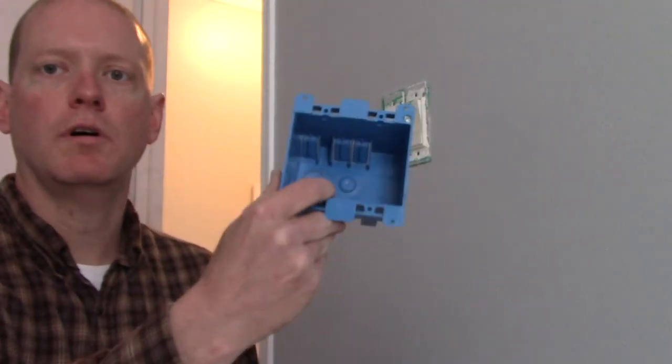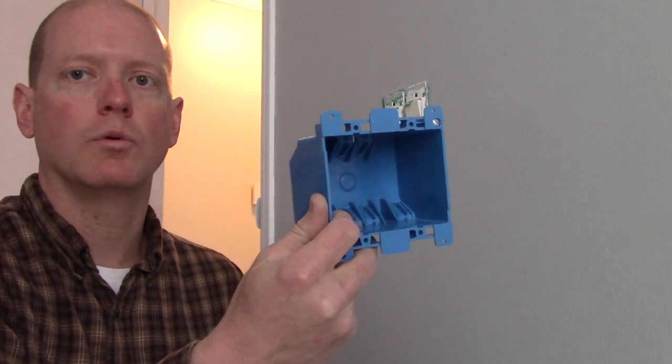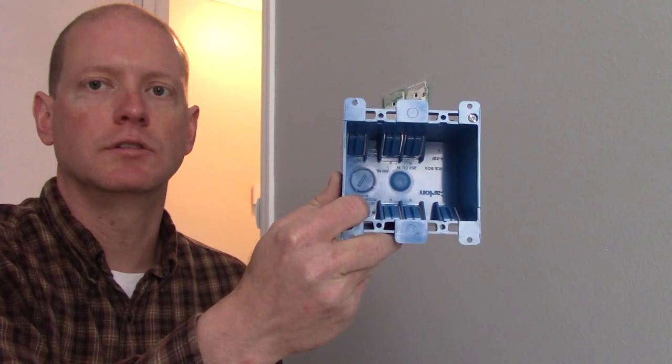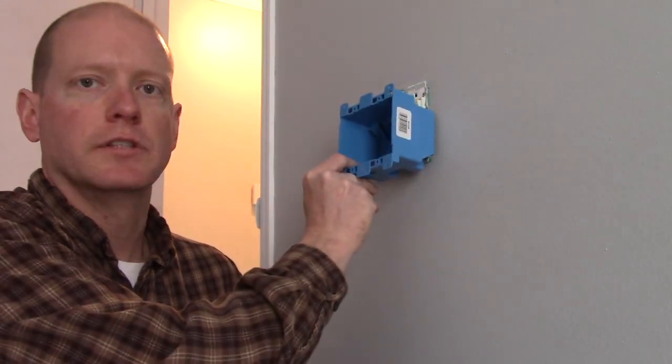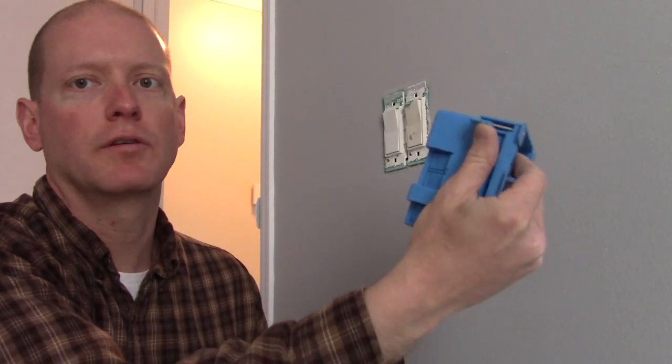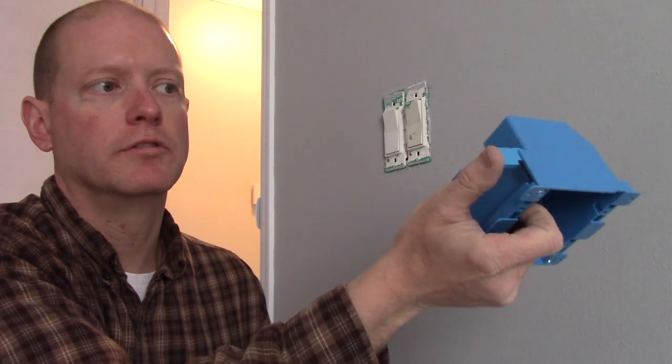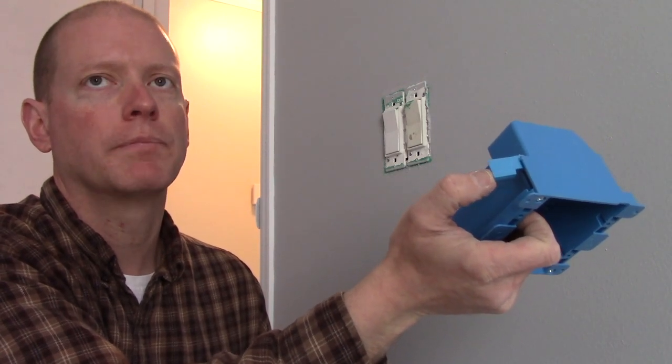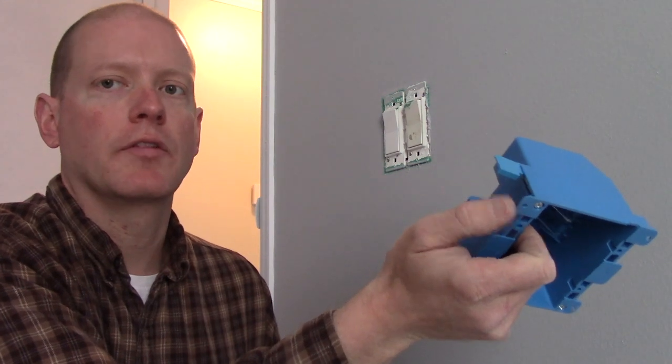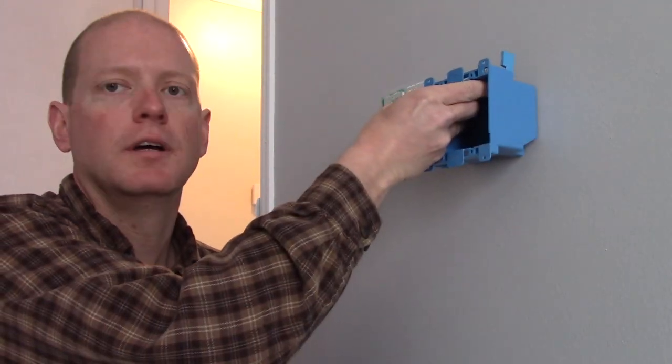All right, first let's cover the things you'll need to do the job. Obviously, you need a couple of switches. You need what's called an old work box, and this is a two-gang box to fit two switches. And you can tell it's the old work box because it has these little flaps. And what these do is when you put it in the wall and you screw it down, these come out and they go behind the drywall and they hold it into the drywall.